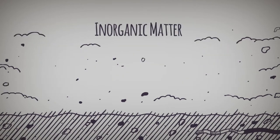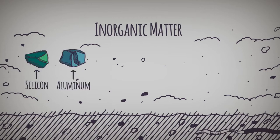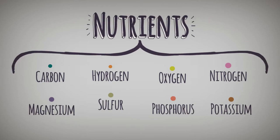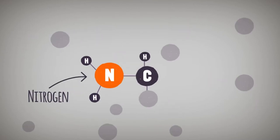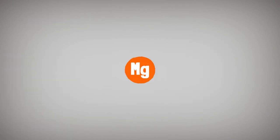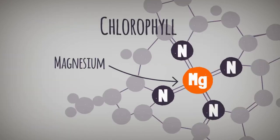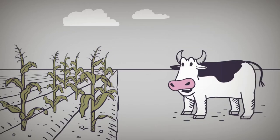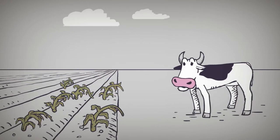Inorganic matter, on the other hand, is composed of other common elements like silicon, aluminum, sulfur, magnesium, phosphorus, and potassium. Many of these common elements are important because they are nutrients for plants and animals and are often the ingredients for vital substances. For example, nitrogen is an essential component of proteins — the basis of muscle in animals. Likewise, magnesium is used to make chlorophyll, that critical substance that plants use to absorb light energy. Without these elements, plants and animals would not function.